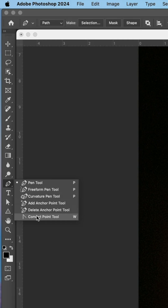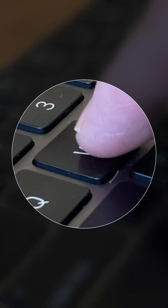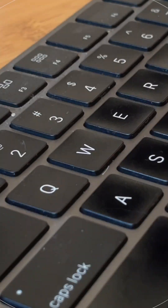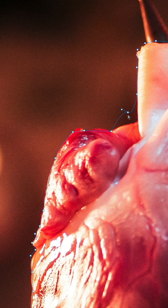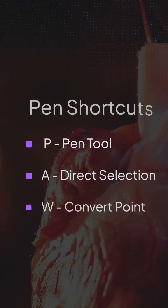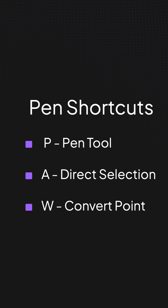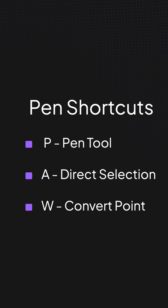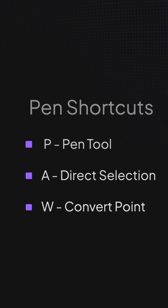Use the letter W to convert an anchor point from curve to straight or from straight to curve. To recap: P for pen, A for direct edit of a path, and W for converting a point.